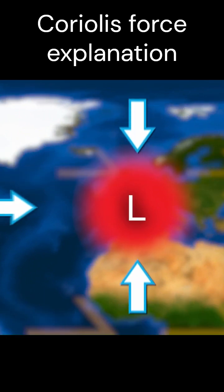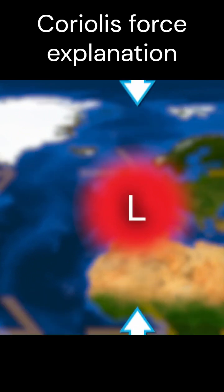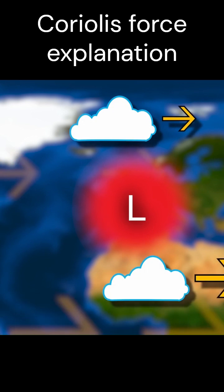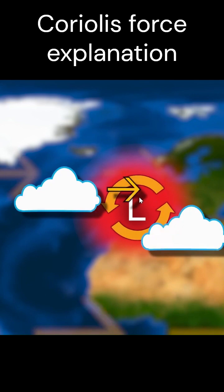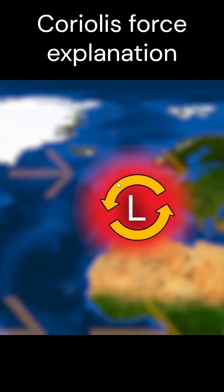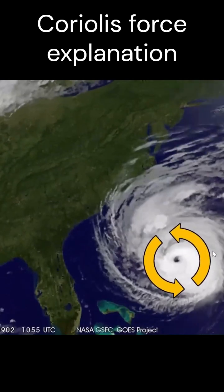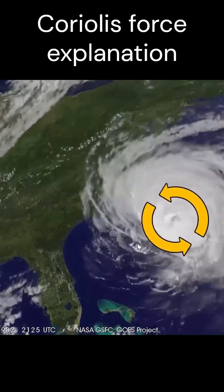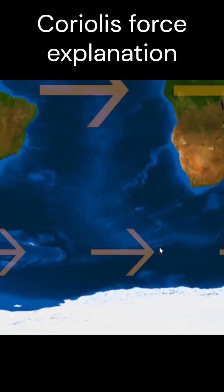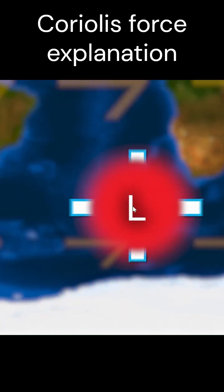Because there is a low pressure zone at the pole, when winds move from the equator they are deflected in this direction, and the other arrows are deflected in this direction. So they move in a counterclockwise rotation in the northern hemisphere.